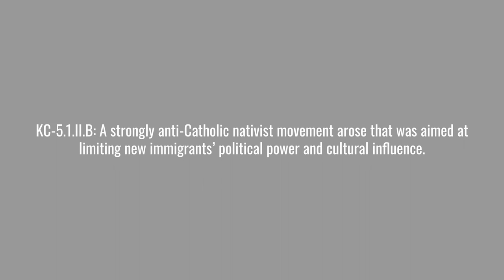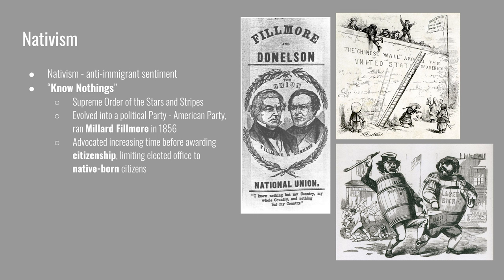The next key concept covers the ways in which migrants were received by the rest of the country. A strong anti-Catholic nativist movement arose aimed at limiting new immigrants' political power and cultural influence. Anti-immigrant sentiment grew so large that there were large societies formed around trying to keep immigrants from coming to the United States. The most prominent one was the Supreme Order of the Stars and Stripes. This started as a secret society, and their members came to be called the Know-Nothings — any time they were asked about their group, they would reply, 'I know nothing.'